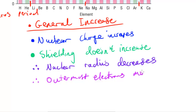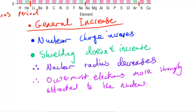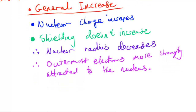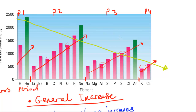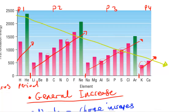The outermost electrons are therefore more strongly attracted to the nucleus. Now, in contrast to this trend within a period — represented by the red lines — if we look at the green lines going down different periods, we have a general decrease in first ionization energy. Let's look at the reasons behind this general decrease as we go from one period to another.